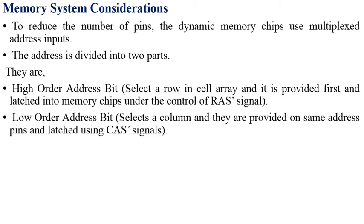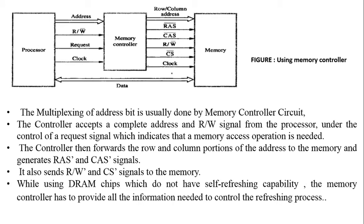Similarly, from the same set of address lines, the low-order n bits are selected and passed to the column decoder. This decoding activity is enabled by the CAS-bar signal. Consider this diagram — here we have a memory controller unit. The multiplexing of address bits is done by the memory controller circuit, which accepts a complete address and a read or write signal from the processor under the control of a request signal indicating that a memory access operation is needed.